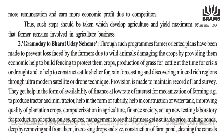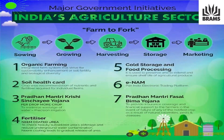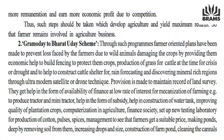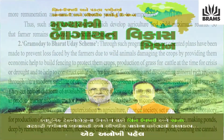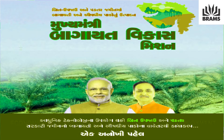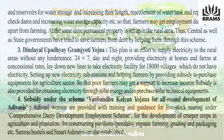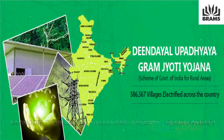The central as well as state governments have tried to save farmers from debt by helping them through these schemes. Central and state governments are helping farmers reduce their debt burden. The Deen Dayal Upadhyaya Gram Jyoti Yojana is one such important scheme that students must remember.